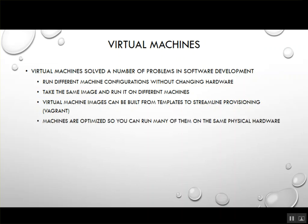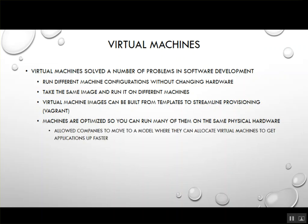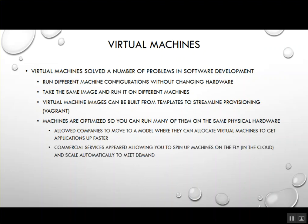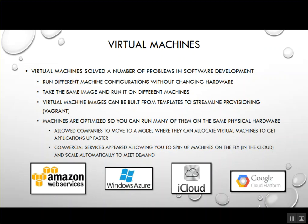Virtual machines are optimized so you can run a whole bunch of them on the same physical hardware, which is a huge benefit to large corporations. Instead of buying physical machines every time you want to host a new application, you just allocate a virtual slice of a server you already have. Because of this, commercial cloud services started popping up — things like Azure, Amazon, iCloud, and Google.